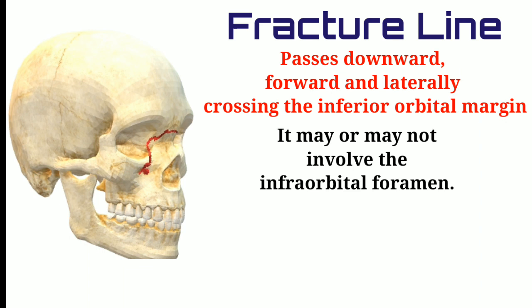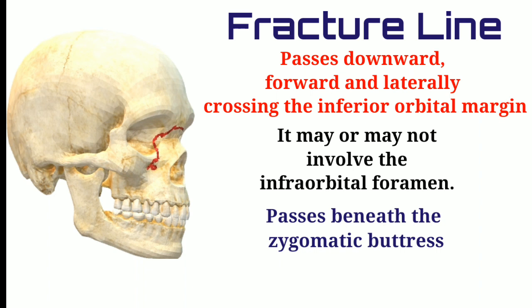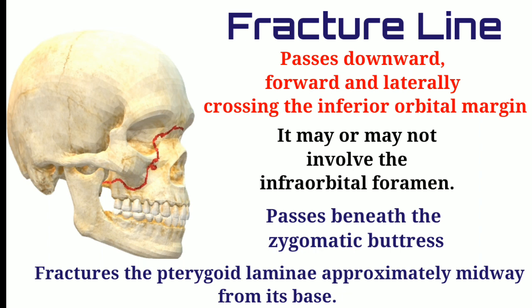From here, the fracture line encounters the zygomatic bone. As seen with LeFort 1, it cannot cross or fracture the zygomatic buttress. Instead, it goes downwards, circumvents the zygomatic bone, then turns abruptly upwards to fracture the pterygoid lamina.